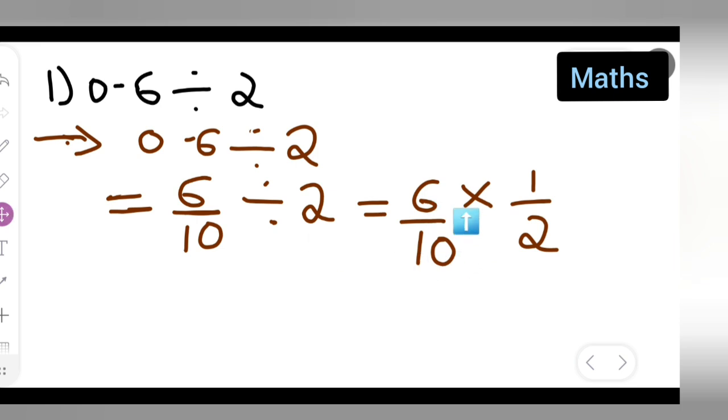You all can cancel this in the table of 2. Right? Like, 2 1s are 2, 2 3s are 6. So, basically you are getting your answer to be 3 upon 10.